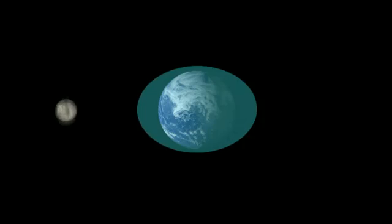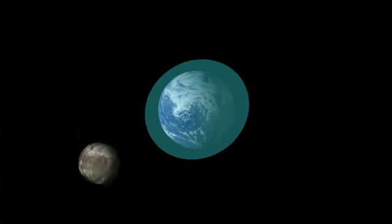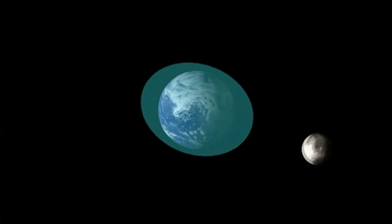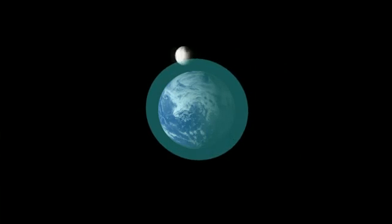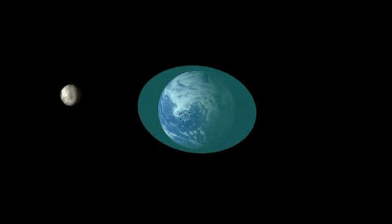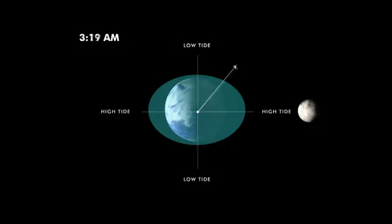Tides are caused by the gravitational pull of the Moon and the Sun, and the rotation of the Earth. The Earth is not a solid sphere — it's actually kind of squishy, especially the layer of water we have on the outside, the oceans. So the gravity of the Sun and the Moon actually kind of squeeze or stretch the Earth and its oceans out into a couple of bulges — one under the Moon, one on the other side of the Earth.